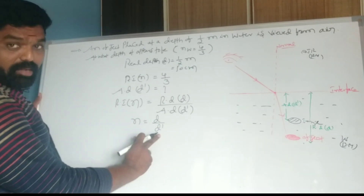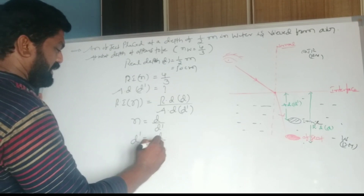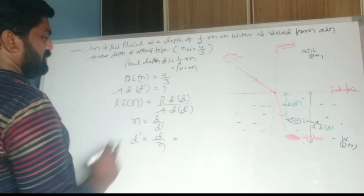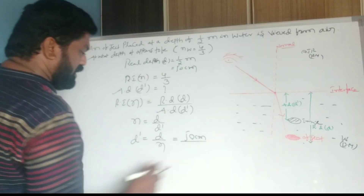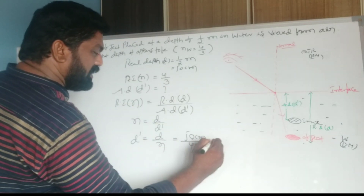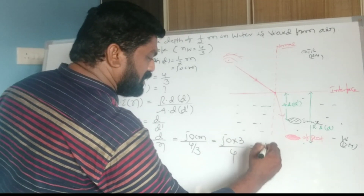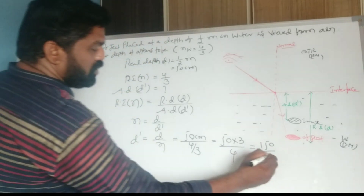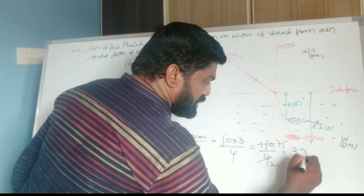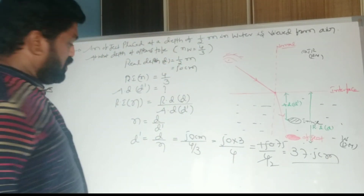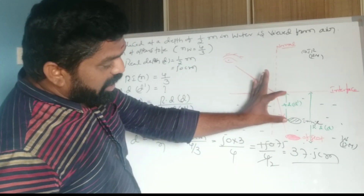We want to find the apparent depth d'. So d' = d/n = 50 centimeters ÷ (4/3) = 50 × (3/4) = 150/4 = 37.5 centimeters. The apparent depth of the object is 37.5 centimeters.